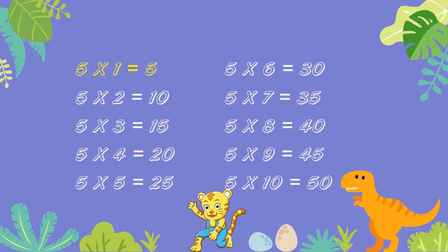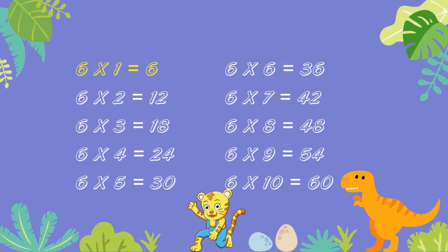5 ones are 5. 5 twos are 10. 5 threes are 15. 5 fours are 20. 5 fives are 25. 5 sixes are 30. 5 sevens are 35. 5 eights are 40. 5 nines are 45. 5 tens are 50.